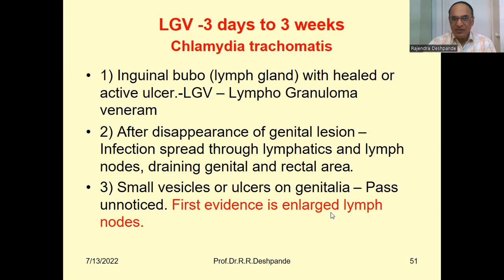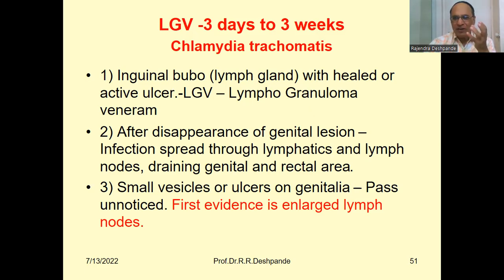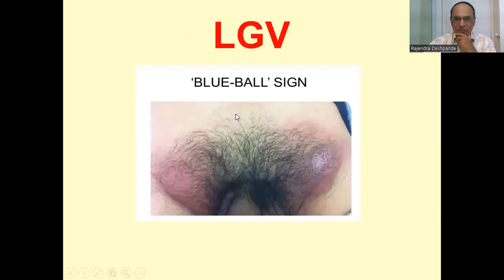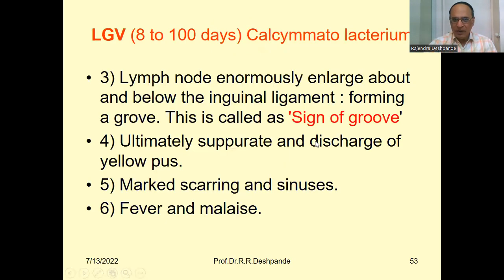The first evidence is when the patient comes to the doctor saying, 'Doctor, there is a big tumor-like appearance here and it is painful.' Here you can see the genitalia and the inguinal region — this is called the groove sign, or blue ball sign — inguinal lymph node enlargement. The lymph node is enormously enlarged above and below the inguinal ligament, forming a groove.